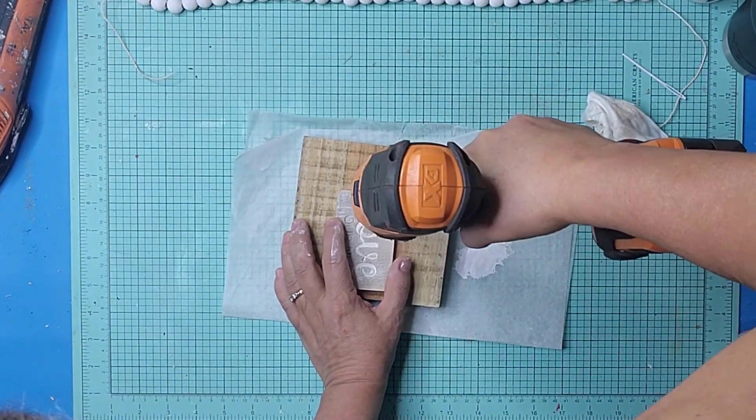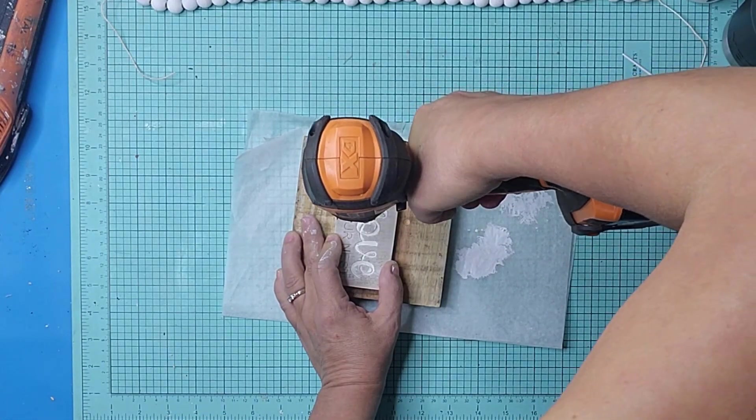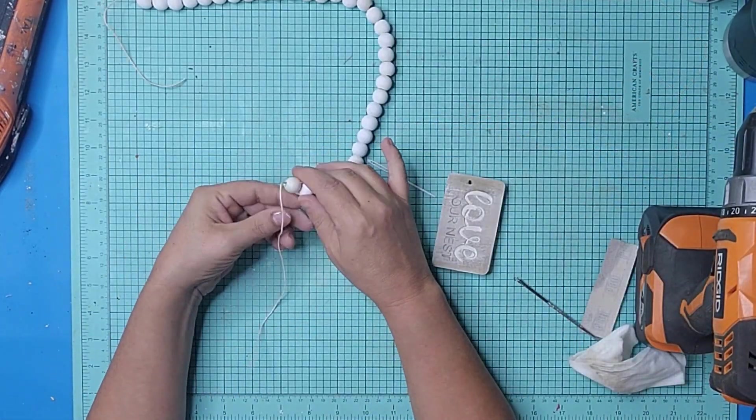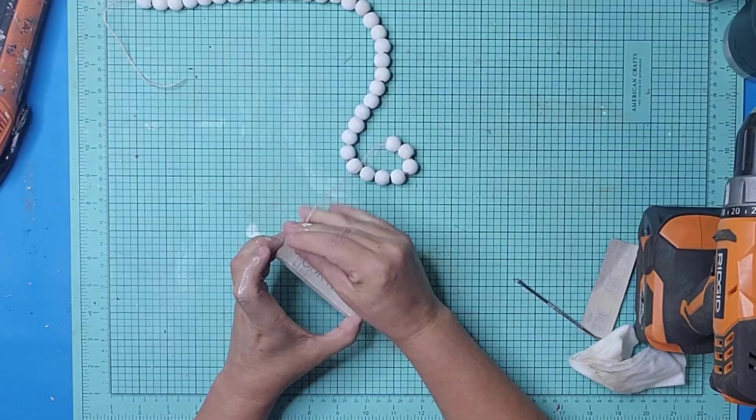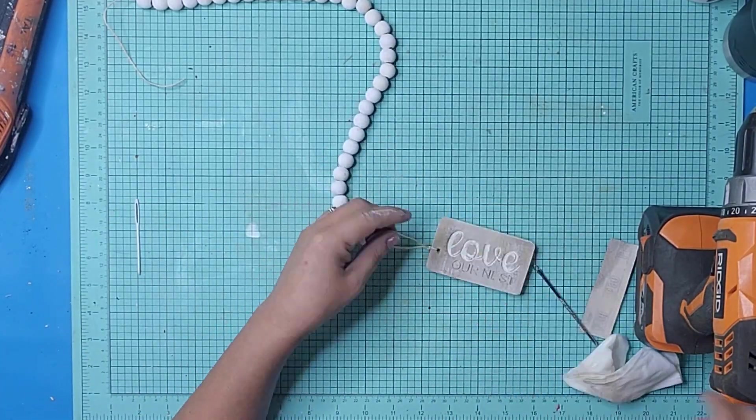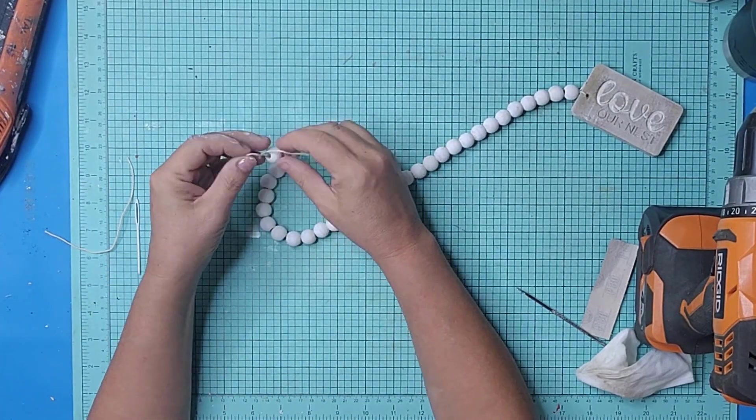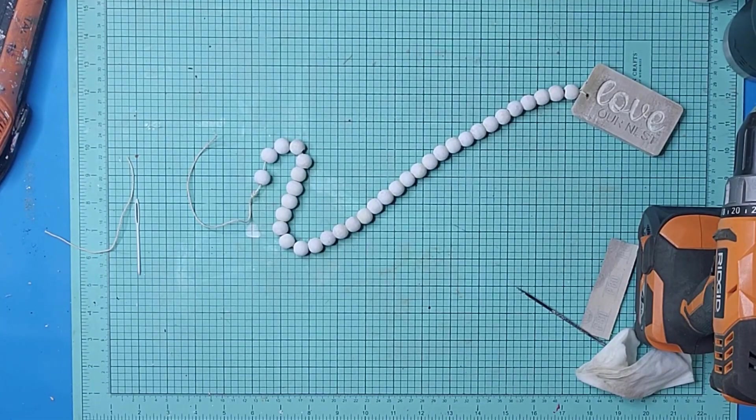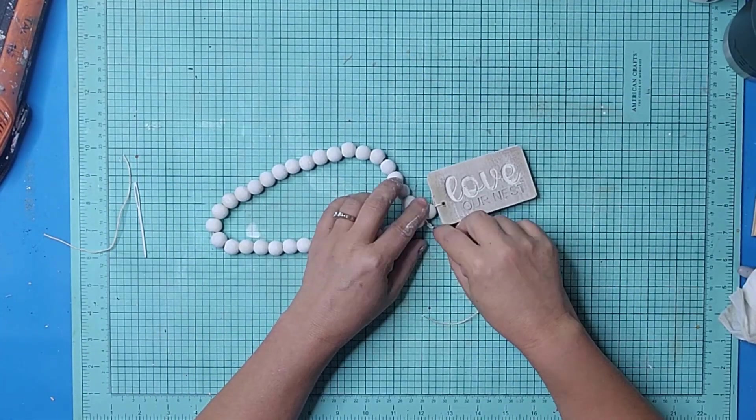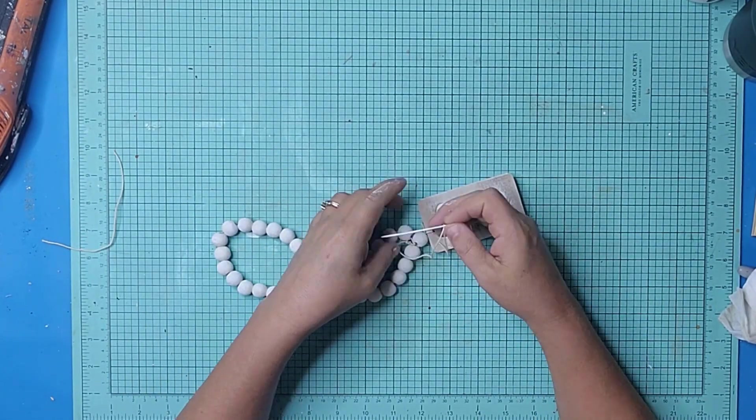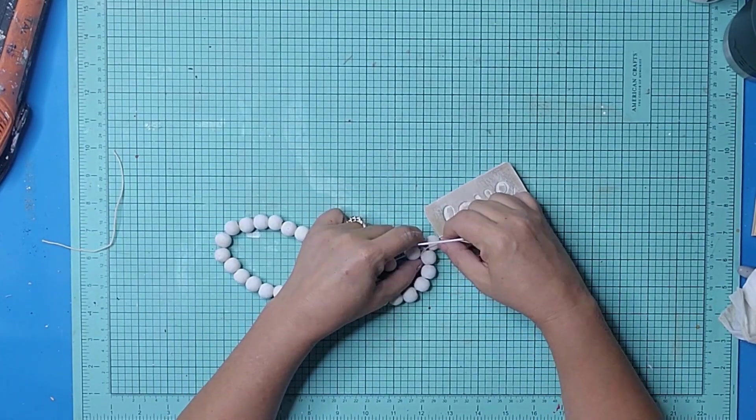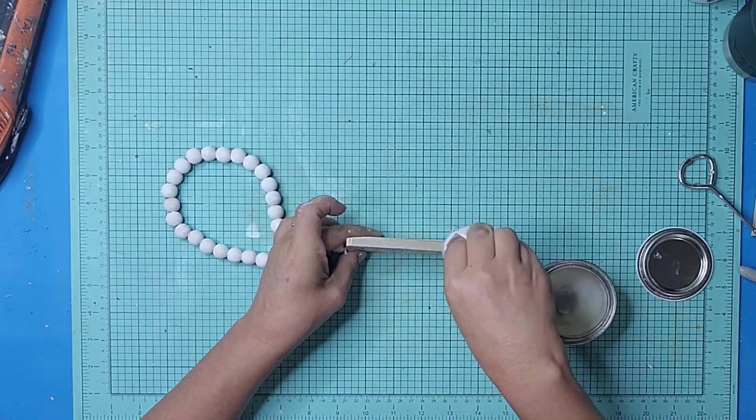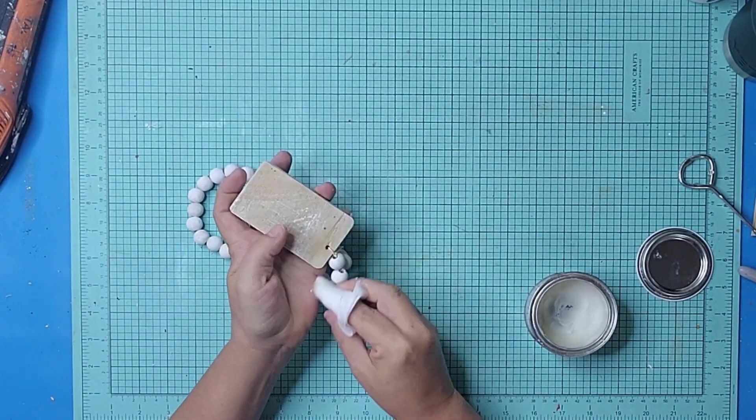I drilled a hole in the top of the tag and added some Dollar Tree wood beads. I was so excited when I went to my local Dollar Tree and they had the round and square beads. I used beads all the time so I bought every string they had. I applied Jolie Finishing Wax to both the tag and the beads.